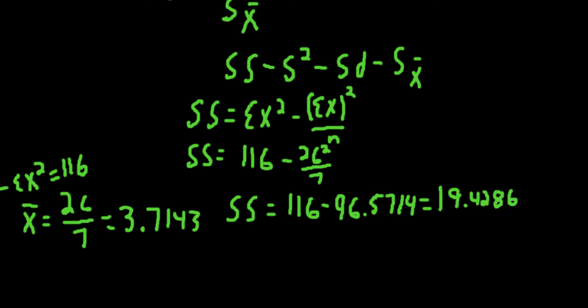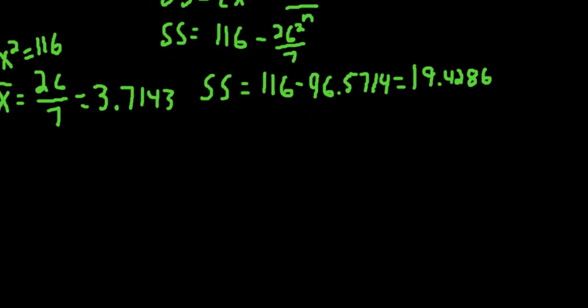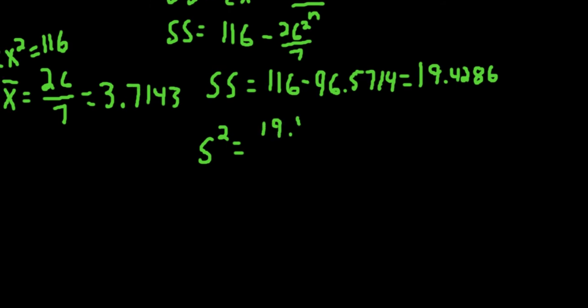So now to turn that into the sample variance, we simply divide it by n minus 1. So the sample variance is going to equal 19.4286 divided by n minus 1, which in this sample is 6, which gives us a sample variance of 3.2381.